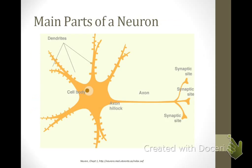The three main parts of any neuron are the dendrites, cell body, and axon. The cell body, or soma, shown here, is the metabolic center of the cell and the main site of protein synthesis.